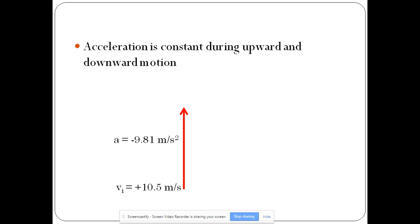It will accelerate at negative 9.81 meters per second squared because remember that acceleration is directed downward. So it should make sense to you that as the object is thrown up, it should slow down because it's going to reach its highest point.